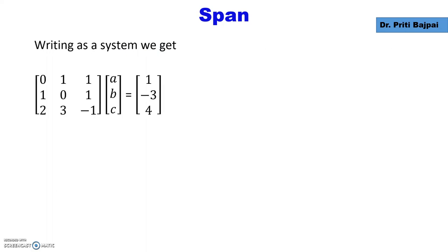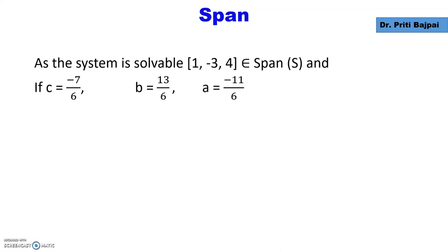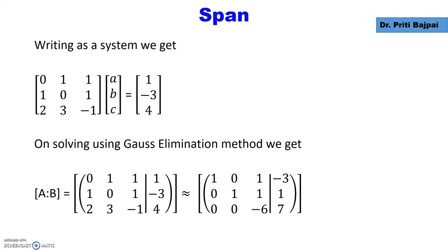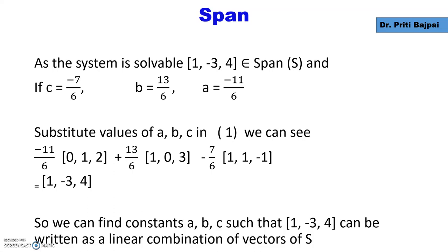On using Gauss elimination, we get the values of the coefficients A, B, C. We get C = -7/6, B = 13/6, and A = -11/6. Let's check: if we substitute the values of A, B, C in our previous equation, it will solve to the vector [1,-3,4]. So we can find constants such that [1,-3,4] can be written as a linear combination of vectors of the subset S.